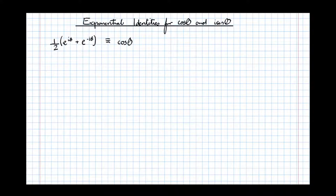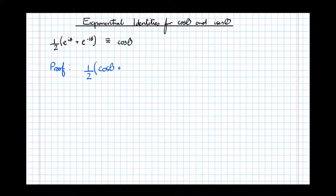And let's do the proof of that now. We write them as their non-exponential counterparts, so that's a half of cos θ + i·sin θ, plus cos(−θ) + i·sin(−θ).